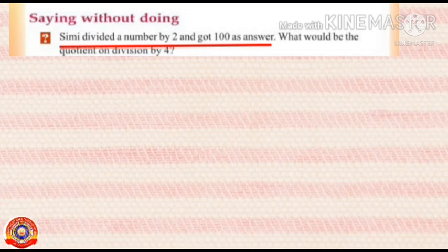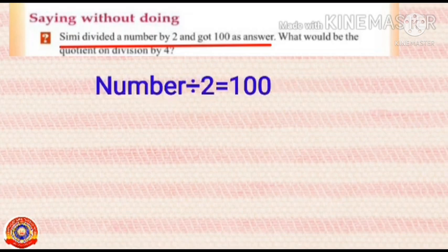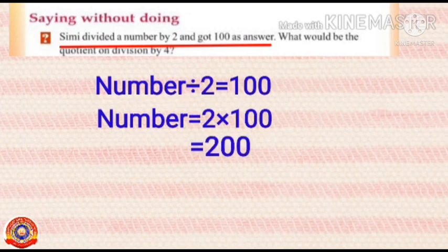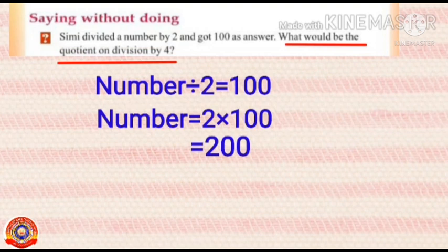Simi divided a number by 2 and got 100 as answer. The number is not given. So, we can write that the number divided by 2 equals 100. To find out the number, multiply 2 and 100. 2 into 100 is equal to 200.